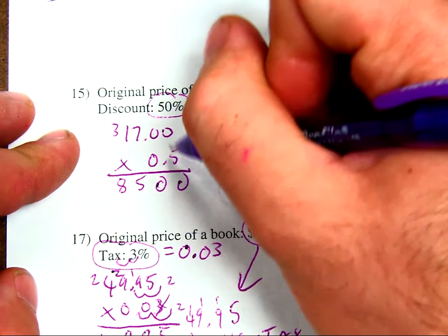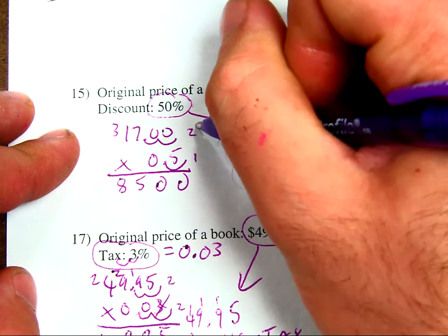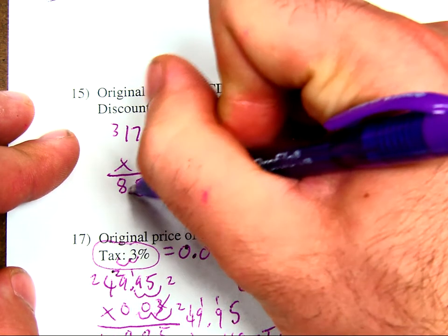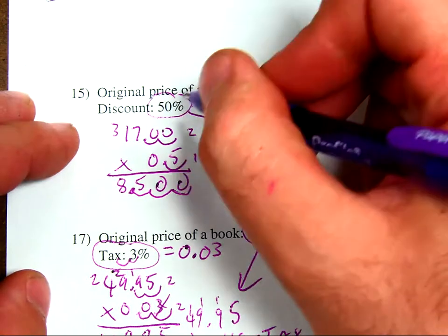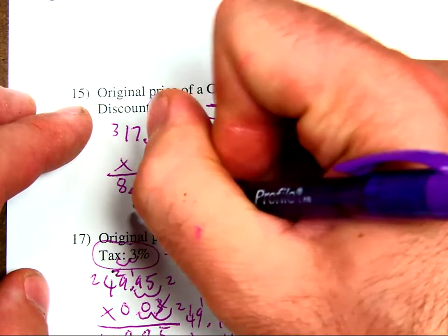Now, how many decimal places do I have? I have 1, 2, 3. So, I can move this over 3 places. 1, 2, 3. My 50% of my price is going to be $8.50.